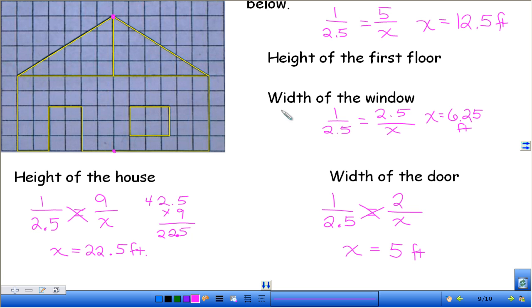So here are the answers to the ones that you guys just did in your notebook, so check your work. I set up the proportion up here for the height, so the height is 5 units. So the actual height of the house is, or the first floor, is 12.5 feet. And then the width of the window, which is right here, is 2.5 units. So the actual width is 6.25 feet.